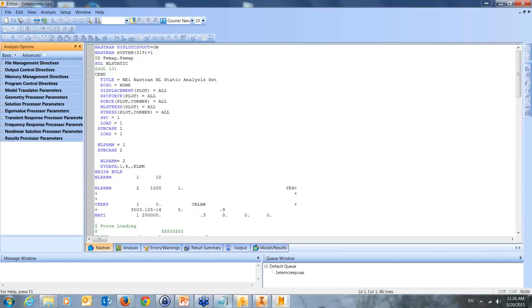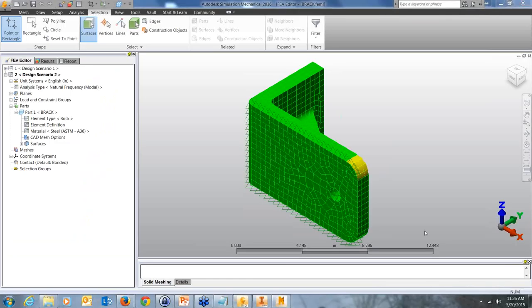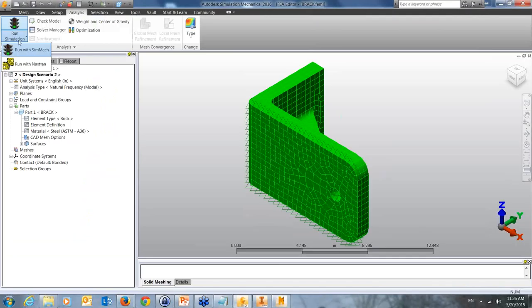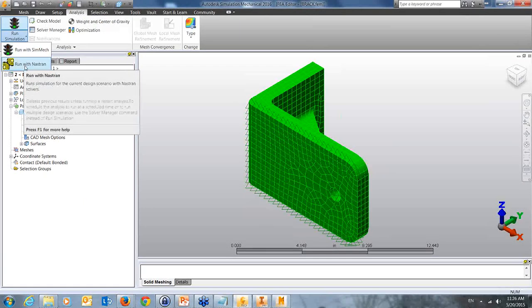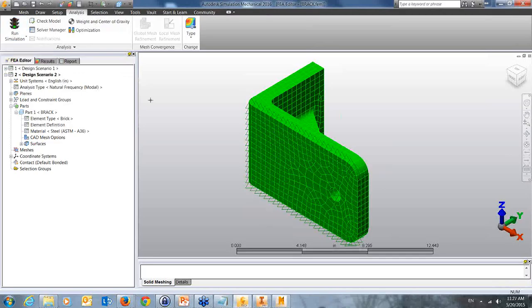So this is the Autodesk-Nastran editor that Mitch was talking about with some of those performance enhancements in 2016 and the switch to 64-bit. So you can see it's not a rich kind of a GUI like SIM mechanical where you can do all your pre and post. It's more of a text editor and then you do have some post-processing capabilities as well. And then there's two ways within Simulation Mechanical to access the Nastran solvers. So here I've got a modal analysis set up. Pretty simple.